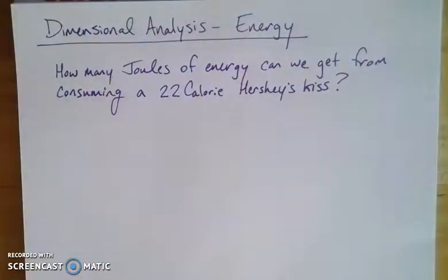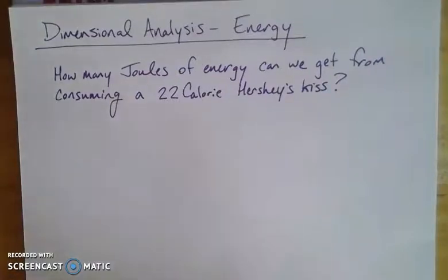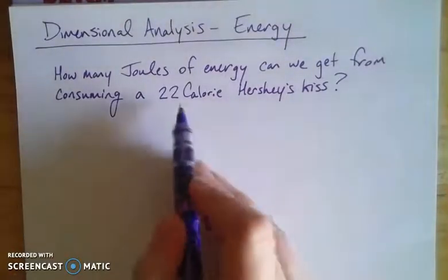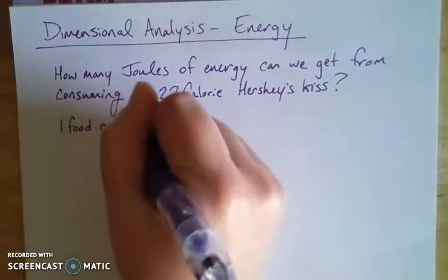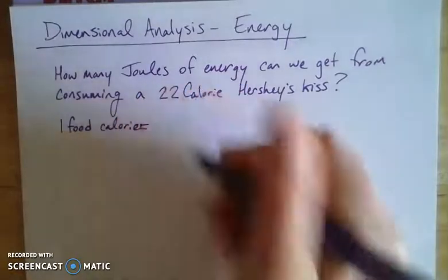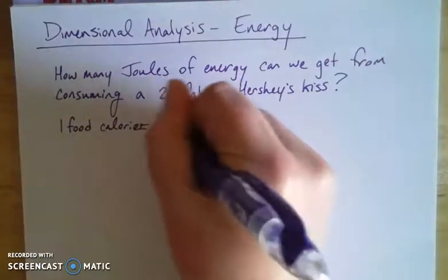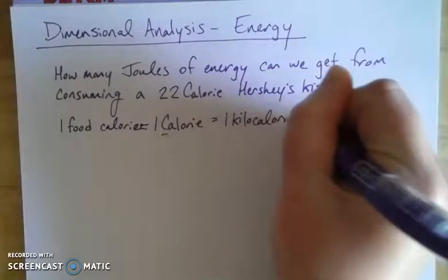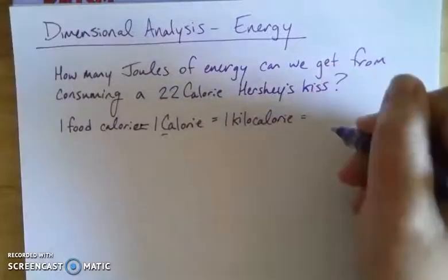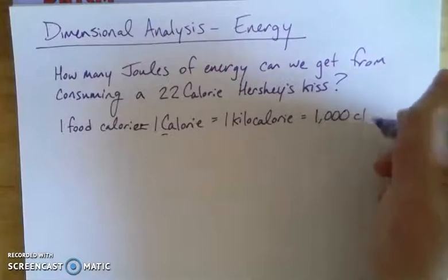I'm eating a Hershey's Kiss — it's got 22 calories in it. How much energy can I get out of eating that one Hershey's Kiss? There are a couple pieces of information we need. Food calories: a food calorie, which I know is a food calorie because it's a capital C, indicates that it's actually one kilocalorie. The prefix kilo in the metric system indicates 10 to the third, or 1,000 — so this would be 1,000 little-c calories.